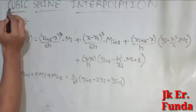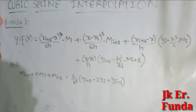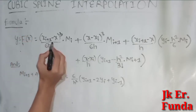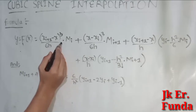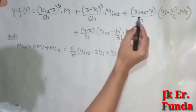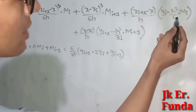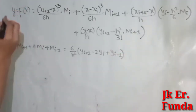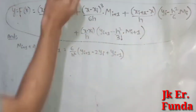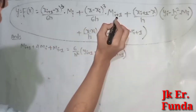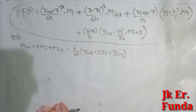Hey guys, today I am going to talk about cubic spline interpolation. First of all, I am going to present the formula: y equals f(x) equals (x_i+1 minus x)^3 divided by 6h times y_i, plus (x minus x_i)^3 divided by 6h times y_i+1, plus (x_i+1 minus x) divided by h times y_i, plus (x minus x_i) divided by h times y_i+1. We define y_i values as 0, 1, 2, 3.